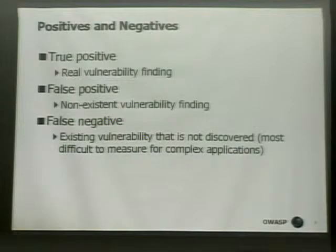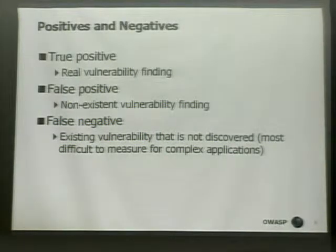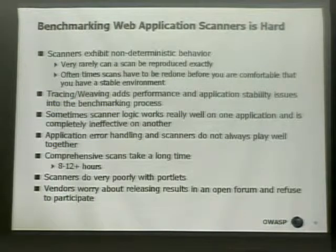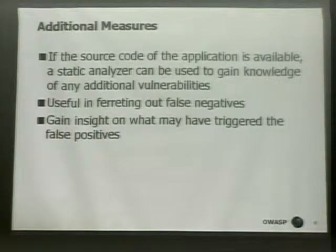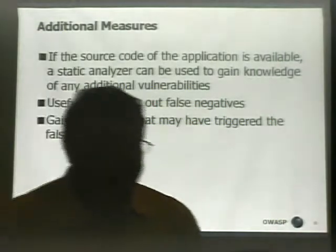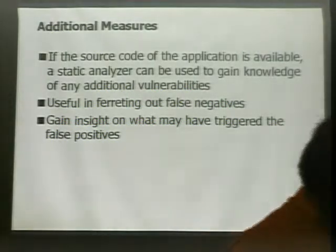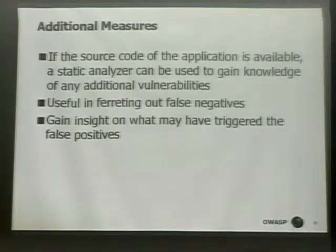A positive is a real vulnerability finding; a false positive is a non-existent vulnerability finding; and a false negative is something that exists but was never found. As an additional measure, sometimes I take a source code analyzer — some kind of static analysis — and go through that also. Sometimes I find additional vulnerabilities and can add them to the false negative count. This particular application does have a few of those in the statistics.